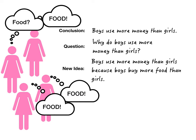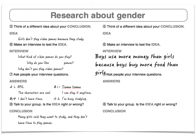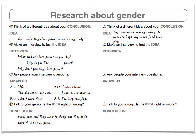Boys use more money than girls because boys buy more food than girls. Write your idea on your paper like this: Boys use more money than girls because boys buy more food than girls. Making a new idea is important, so think about it carefully.